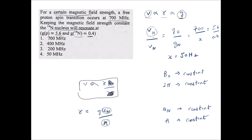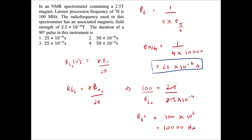Since ν ∝ γ ∝ g, we write νₚ / ν(N) = gₚ / g(N), so 700 / x = 5.6 / 0.4. Dividing 5.6 by 0.4 gives 14, so x = 700 / 14 = 50 MHz. The correct answer is option four.